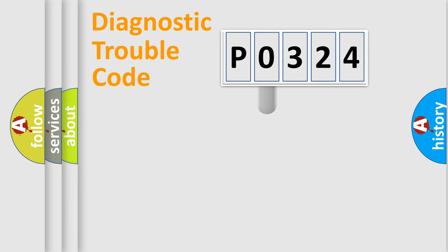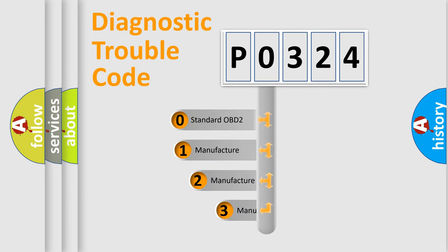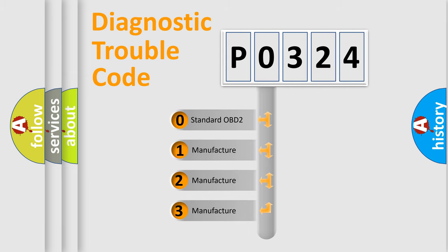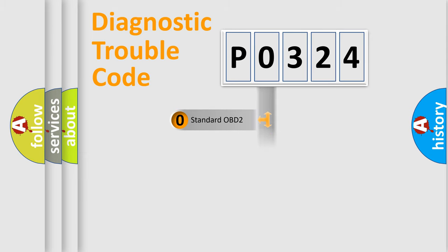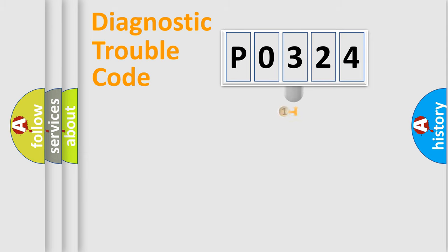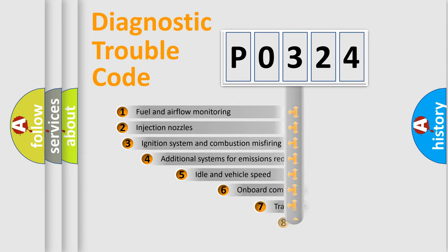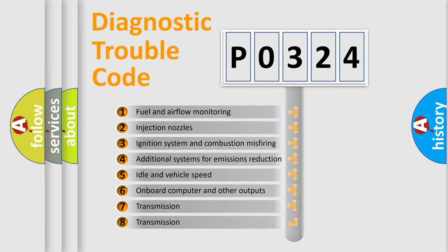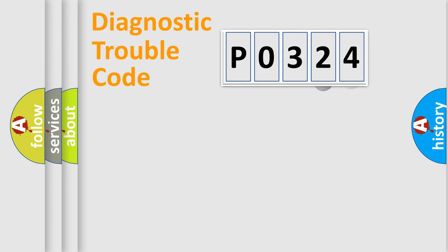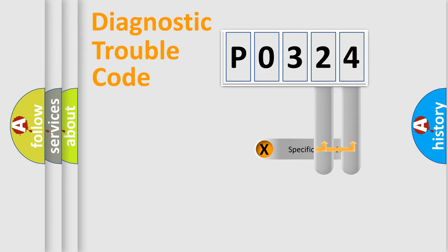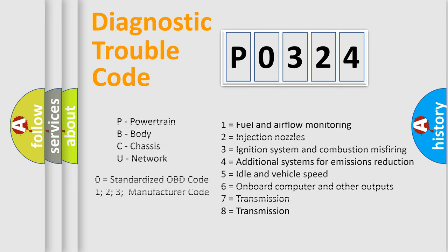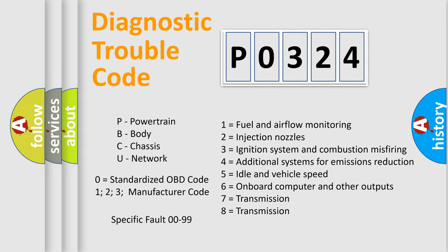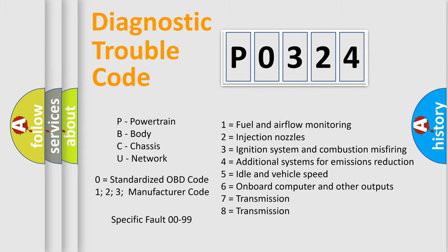This distribution is defined in the first character of the code. If the second character is expressed as zero, it is a standardized error. In the case of numbers 1, 2, or 3, it is a manufacturer-specific error. The third character specifies a subset of errors. This distribution is valid only for the standardized DTC code, and only the last two characters define the specific fault of the group. This division is valid only if the second character is expressed by the number zero.